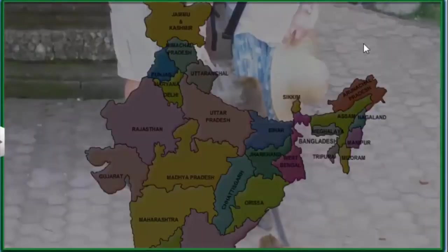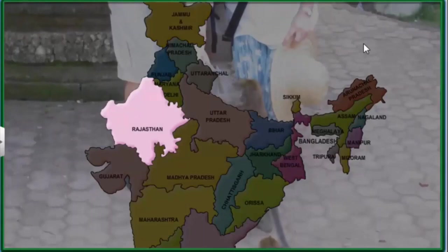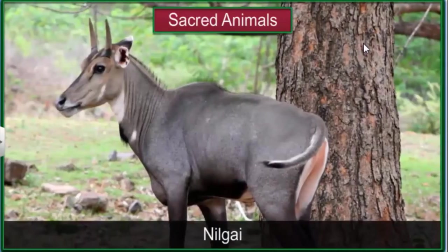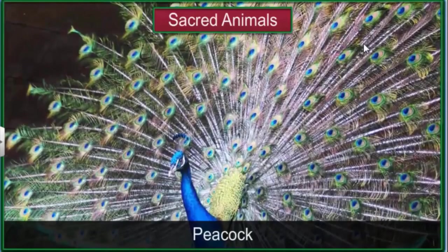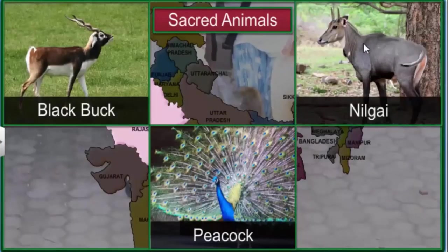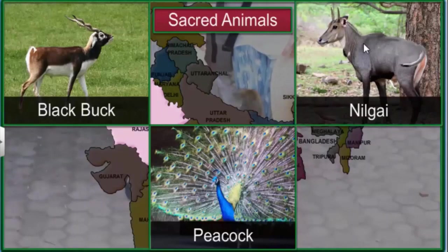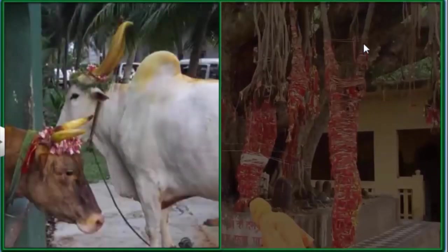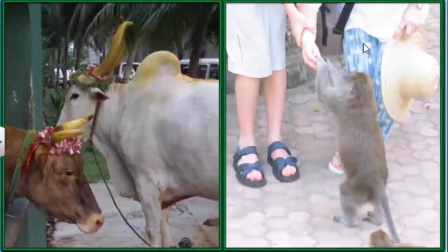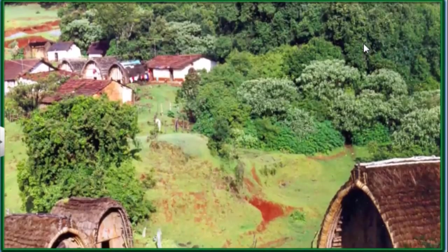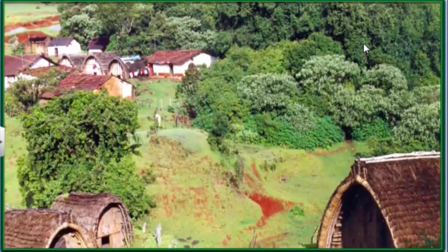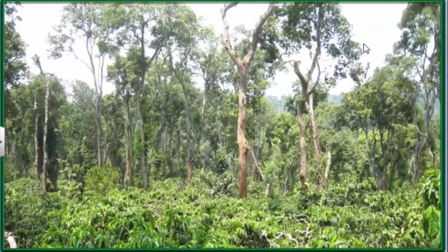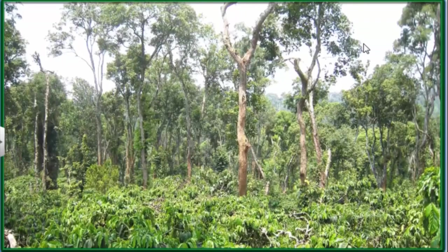The Bishnoi community in Rajasthan is known for its love and devotion to animals such as the black buck, nilgai, and peacock. All such beliefs ultimately lead to wildlife conservation. Another reason for community participation in conservation efforts is the concern for their own survival — forests are home to many of India's tribal communities that depend on forests for their survival and livelihood. Many such communities are actively helping government officials in their conservation efforts.